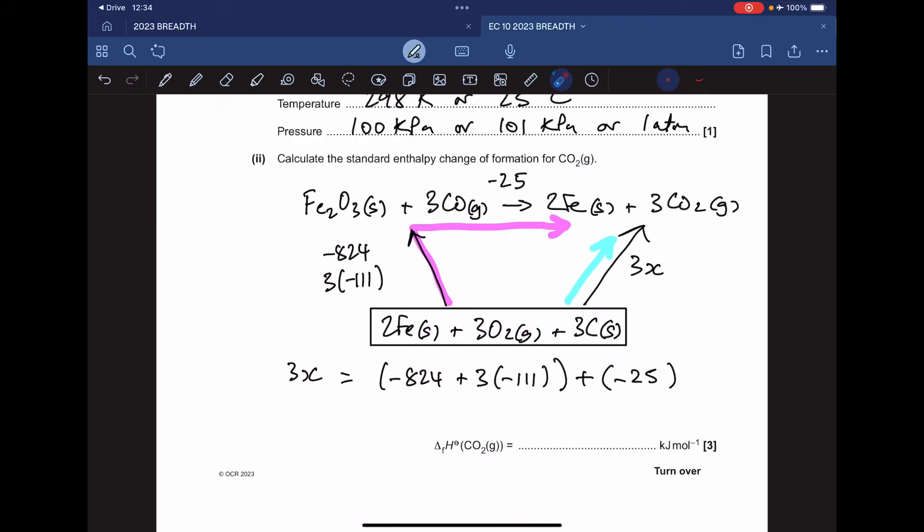Putting the numbers in, we get this here. Tidying this up gives us 3x equals minus 1182. I just need to divide that by three to get the enthalpy change of formation for carbon dioxide, which comes out at minus 394 kilojoules per mole.